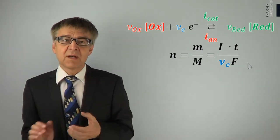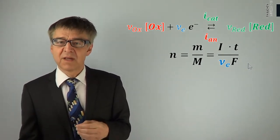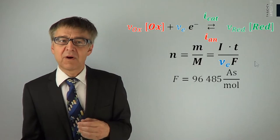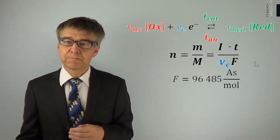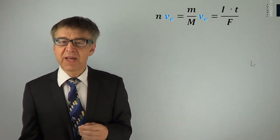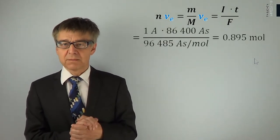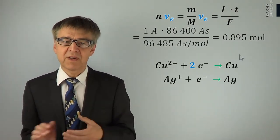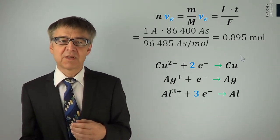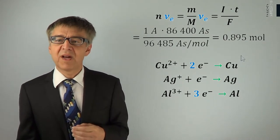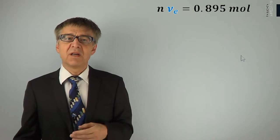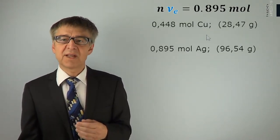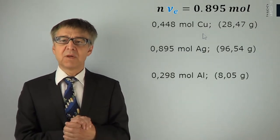The Faraday constant corresponds to the charge of one mole of electrons: 96,485 Coulombs per mole. If we allow, for example, a current of 1 A flowing for one day, then this corresponds to 0.895 moles of electrons. We need 2 moles of electrons to deposit 1 mole of copper, 1 mole of electrons to deposit 1 mole of silver, and 3 moles of electrons to deposit 1 mole of aluminum. So according to Faraday's law, 28 grams of copper, 96 grams of silver, and 8 grams of aluminum will deposit.